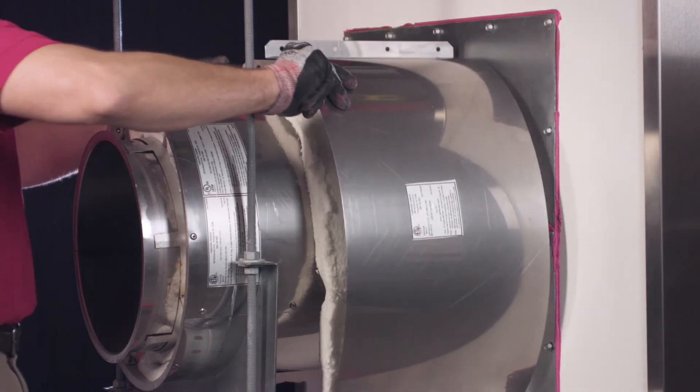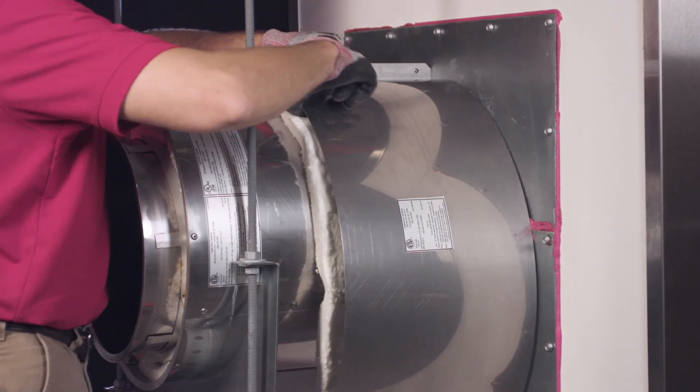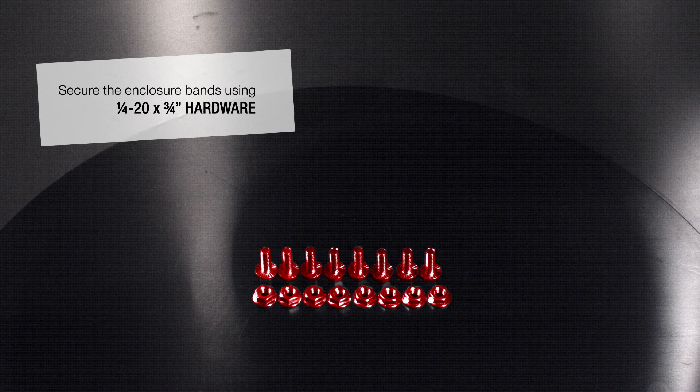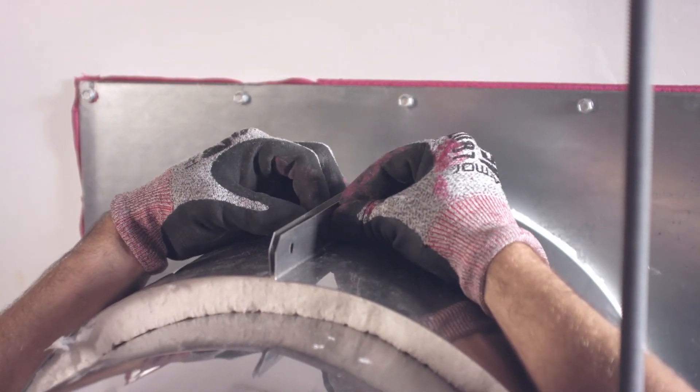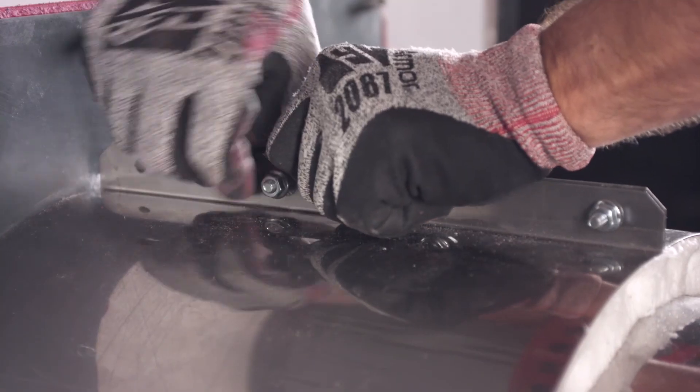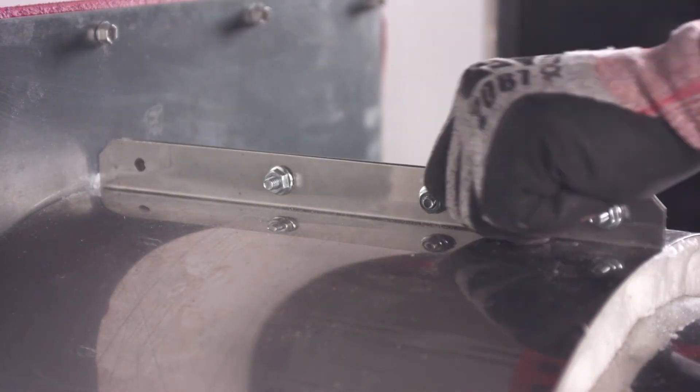Place the half enclosure bands around the insulation on each side and use quarter twenty by three quarter inch hardware to fasten the tabs on the half enclosure bands together. Loosely tighten the enclosure band screws before placing the insulation.